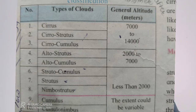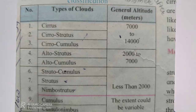Clouds at an altitude between 7000 meters to 14000 meters are cirrus clouds, cirrostratus clouds, and cirrocumulus clouds. These clouds are considered high clouds. Clouds at an altitude between 2000 meters to 7000 meters are called medium altitude clouds.